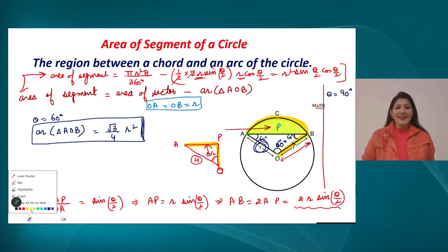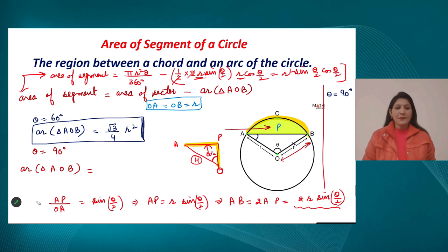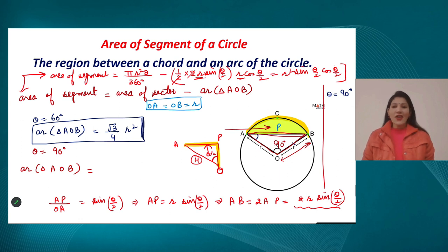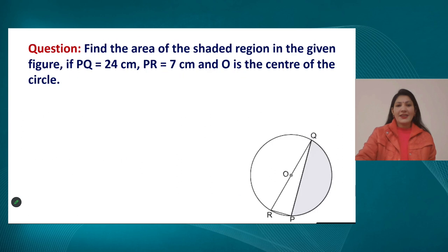Let us discuss another question: find the area of the shaded region in the given figure. RQ is the diameter of the circle. PQ = 24 cm and PR = 7 cm are given, but radius is not directly given. Since RQ is the diameter, the angle RPQ is a right angle — because the angle in a semicircle is always 90°. So triangle RPQ is a right-angled triangle at P.